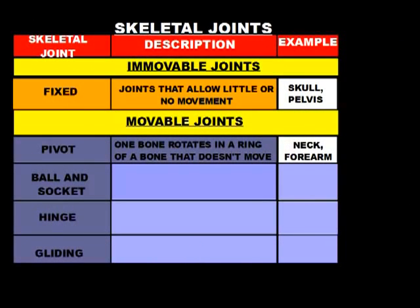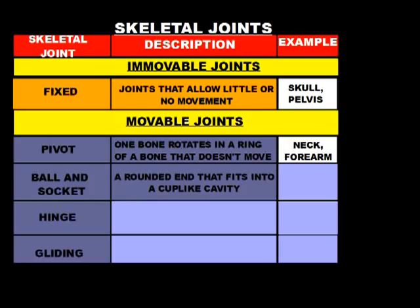The next type of joint we're going to discuss is called the ball and socket joint. A ball and socket joint is where a bone has a rounded end that fits into a cup-like cavity. The rounded end would be the ball, and the cup-like cavity would be the socket. There are two places where we have ball and socket joints.